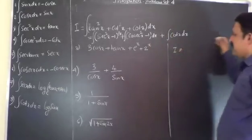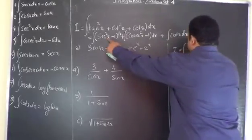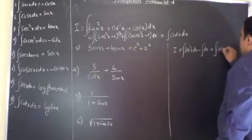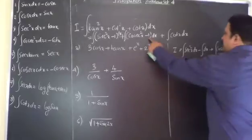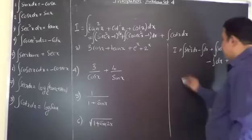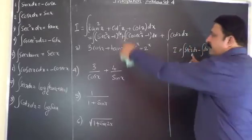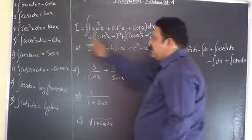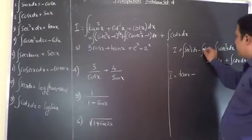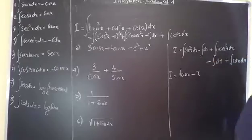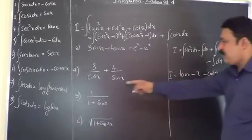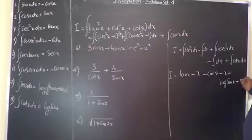Opening the bracket: this becomes integral sec² x dx minus integral dx, plus integral cosec² x dx minus integral dx, plus integral cot x dx. Now write the answers: integral sec² x dx is tan x. Integral dx — since the integrand is 1 — is just x, because the differential coefficient of x is 1. Integral cosec² x dx is minus cot x. Again minus x. Plus integral cot x dx is log sin x.